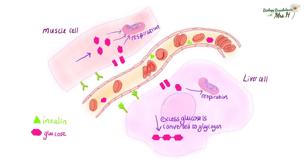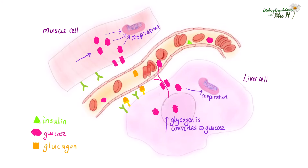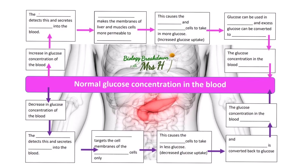In muscle cells, that glucose is used in respiration. When the blood glucose concentration falls below normal levels, the pancreas secretes a hormone called glucagon. The liver cells have glucagon receptors as well as insulin receptors. When glucagon binds to the liver cell, it causes glycogen to be converted back into glucose, and then that glucose can diffuse back into the blood to increase the glucose concentration back to normal again.